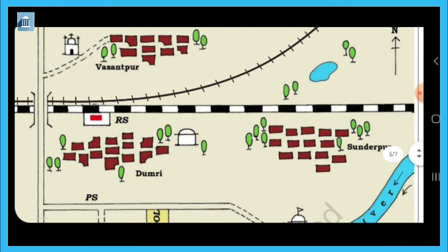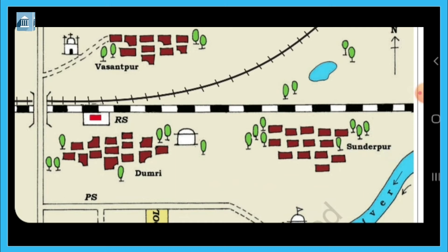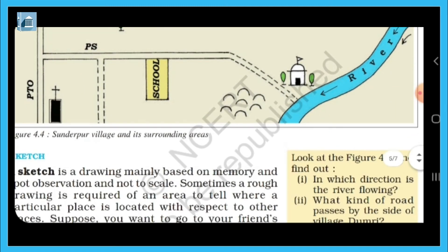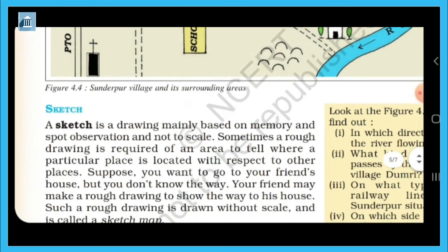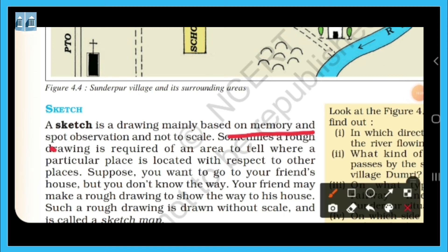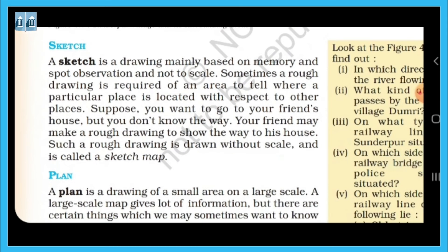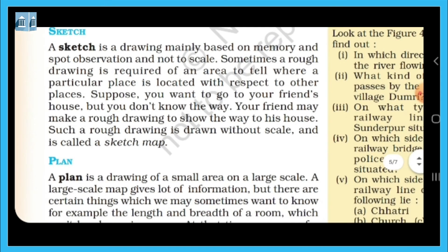Now, what is a sketch? A sketch is a drawing mainly based on memory and spot observation, and not to scale. Sometimes it is a rough drawing. For example, if you want to go to your friend's house and you don't know the way, your friend may make a rough drawing to show you the route. This is what a sketch is.